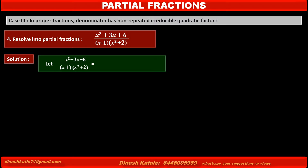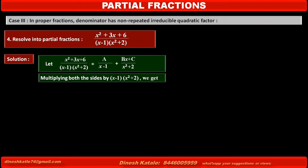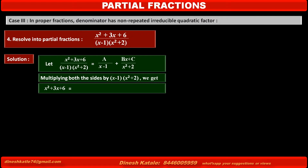So the fraction equals A/(x - 1) plus (Bx + C)/(x² + 2). To remove the denominator of each term, multiply both sides by the LCM (x - 1)(x² + 2). We get: x² + 3x + 6 = A(x² + 2) + (Bx + C)(x - 1). Consider this as equation 1.